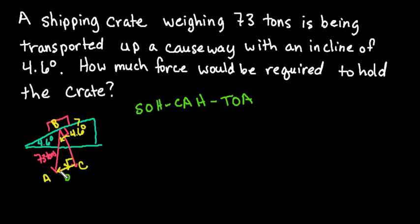So since we have a right triangle and we are trying to find this side measure down here, it is opposite of the angle that we know. So since it's opposite, and then we also know the hypotenuse, because this one is opposite of our right angle, we are going to use sine. So we can say that sine of 4.6 degrees is equal to the opposite side B over 73 tons.